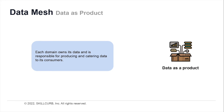The second principle centers around treating data as a product rather than just as an asset in an organization. This works in conjunction with distributed domain ownership of data. Now that each domain owns its data and is responsible for producing and catering data to its consumers, it is expected to be high quality, fresh, and trustworthy.